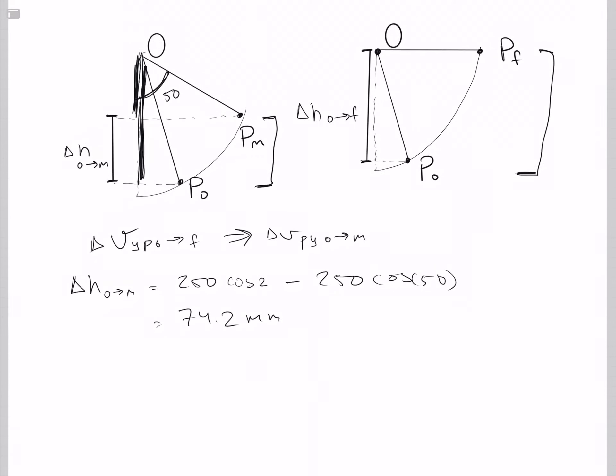Likewise, to solve for delta H from zero to final, you'll find the 250 cosine 20. And that is going to be 235 millimeters. And we'll use these in the next equations.